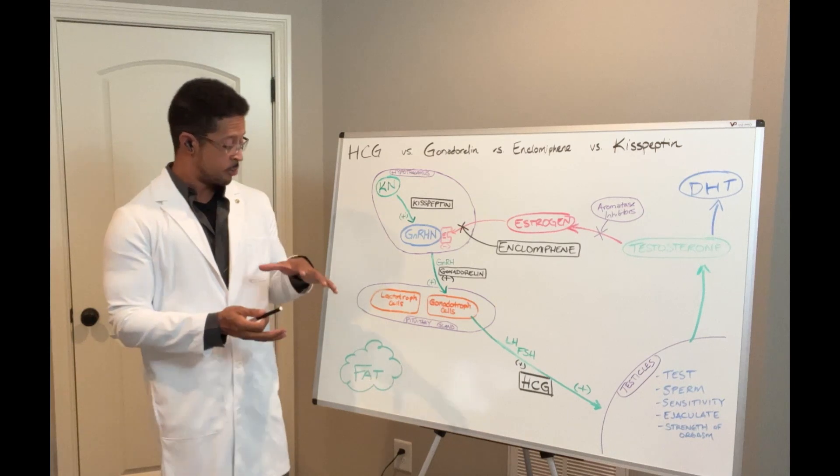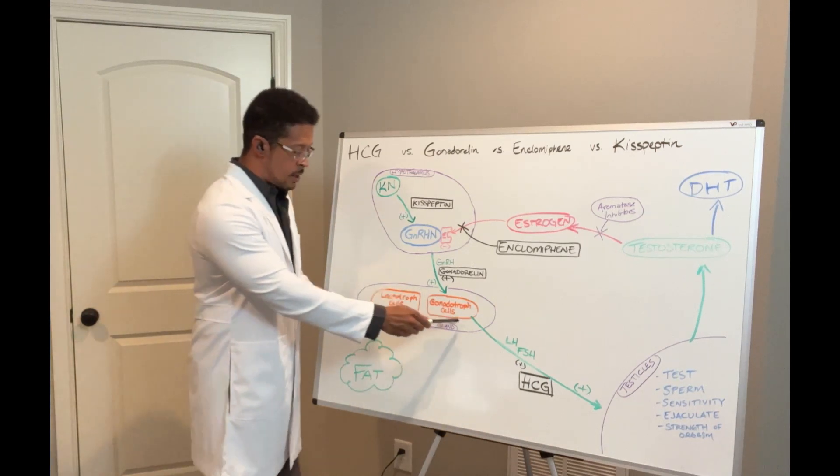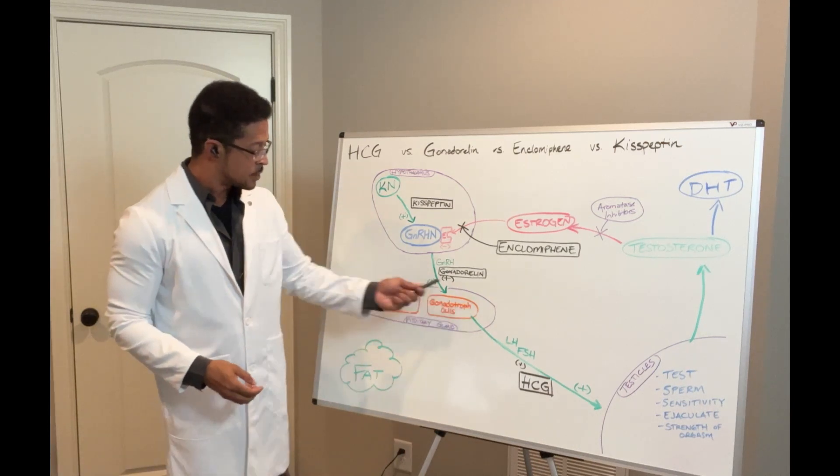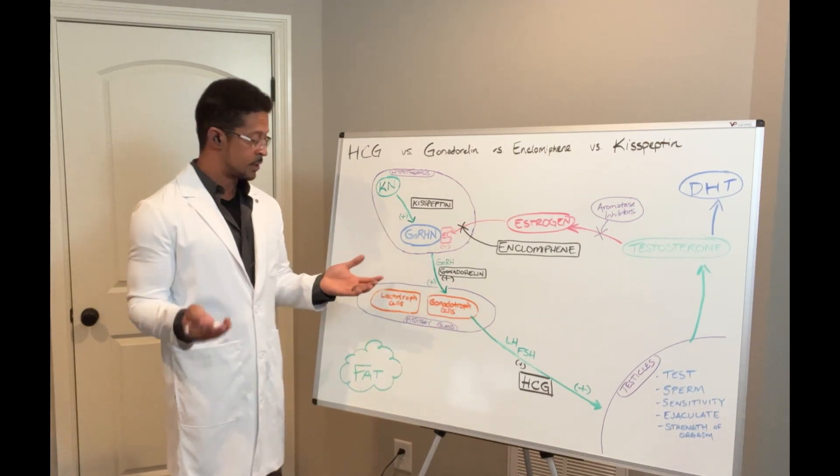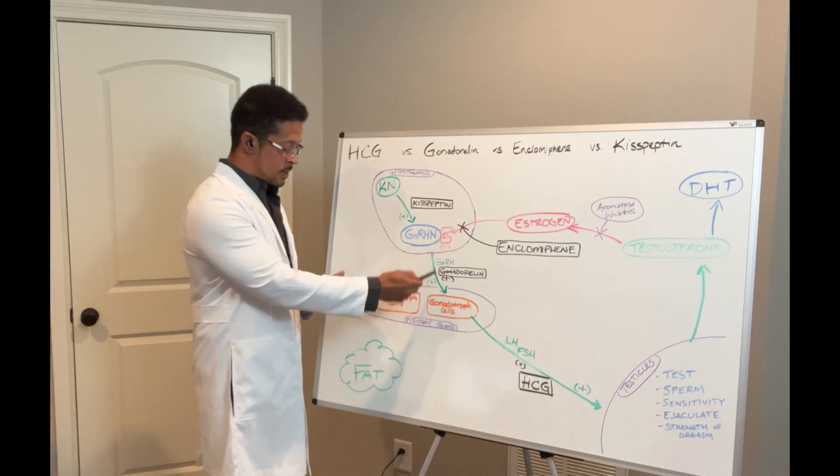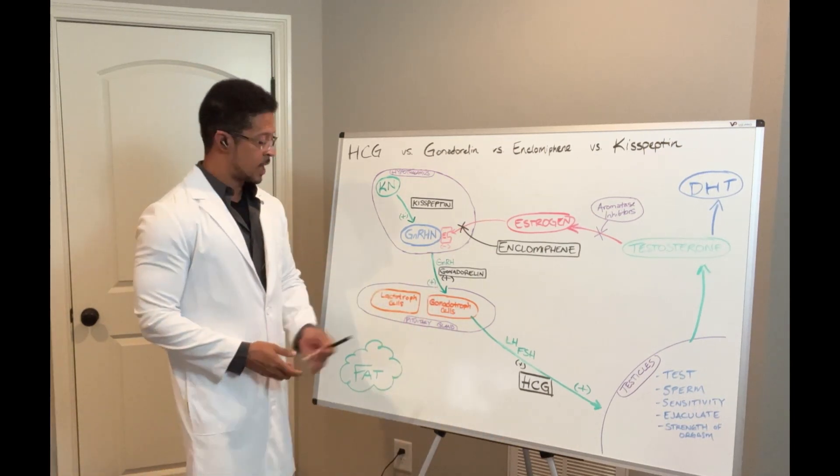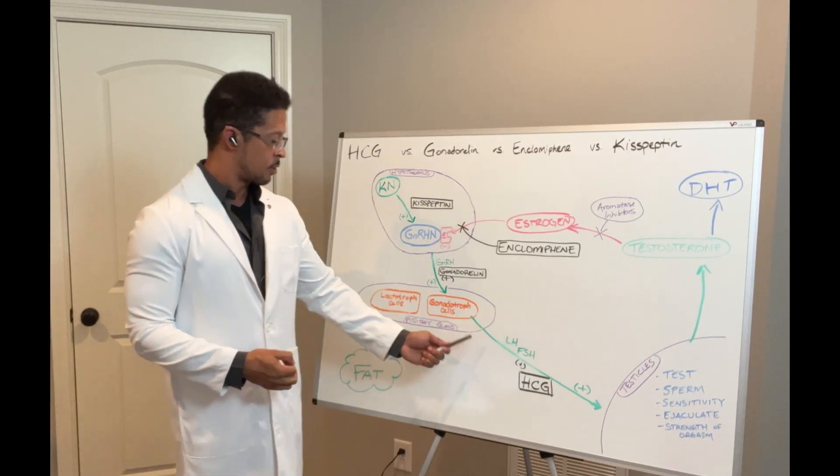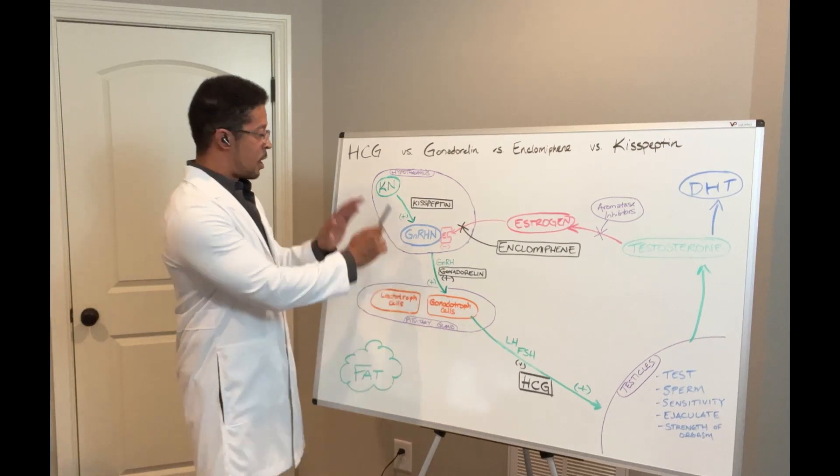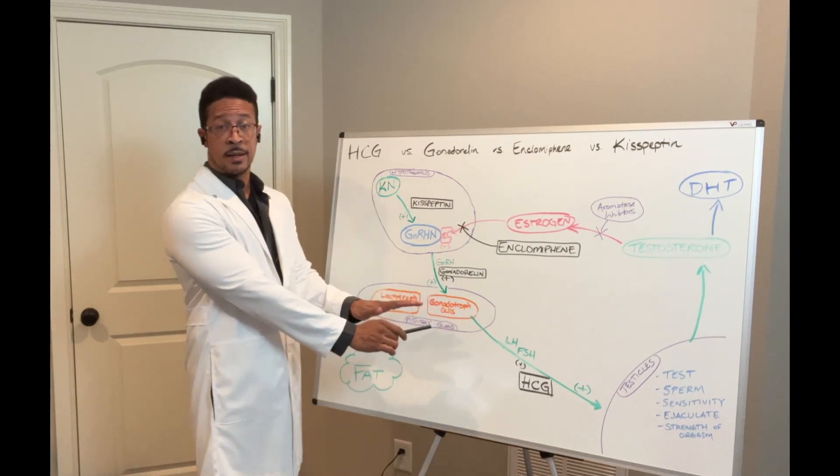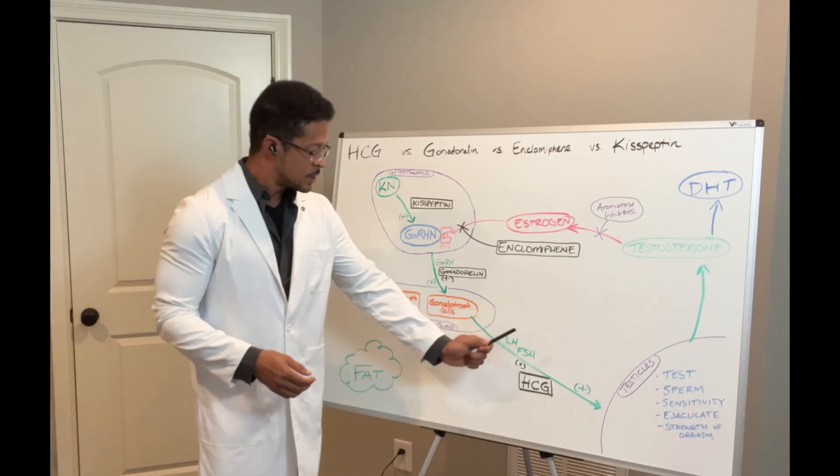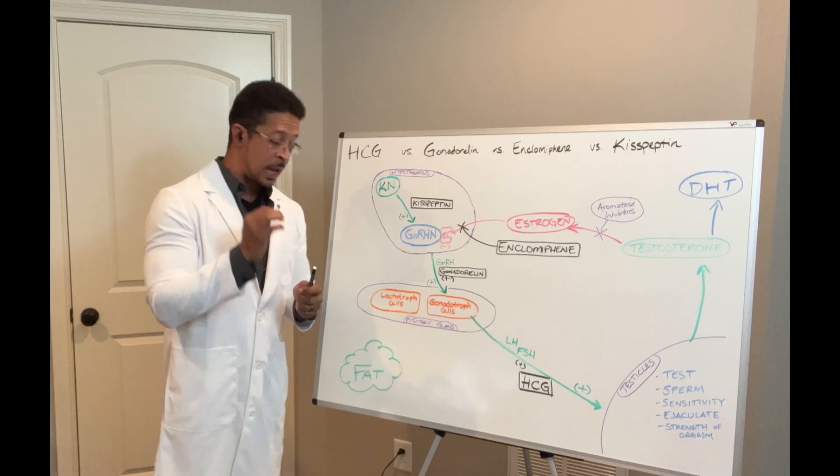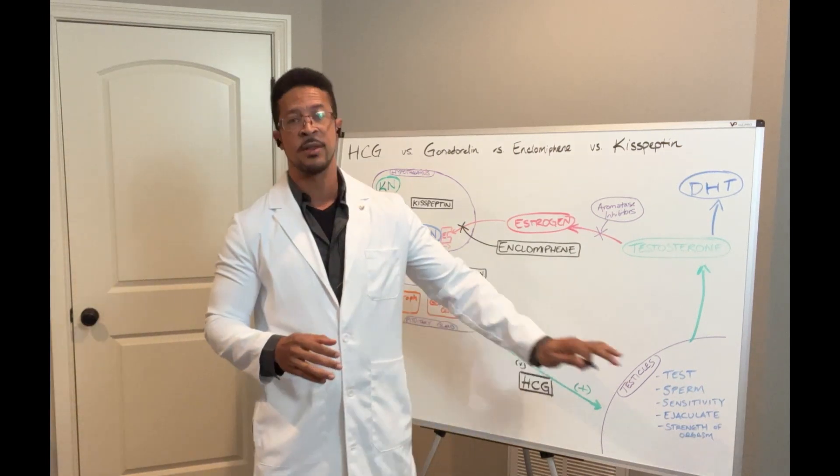Inside the pituitary gland deep in the brain, there is another section called the gonadotrope cells. In the gonadotrope cells, they're waiting, they're sitting there waiting for a signal, which is the GNRH. Once they get that signal, then they produce something new. They produce LH, luteinizing hormone and follicular stimulating hormone. These are the two hormones, and all of these so far that we've talked about are peptides.